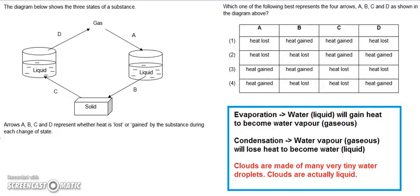The diagram below shows the three states of a substance. So this substance can be a solid, liquid, and gas. The arrows A, B, and C represent whether heat is lost or gained by the substance during each change of state.